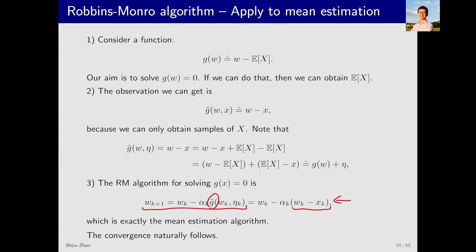Therefore, the mean estimation algorithm is an RM algorithm. According to the properties of RM algorithms, if alpha_k satisfies the conditions of its square sum being finite and its sum being infinite, the algorithm will converge.